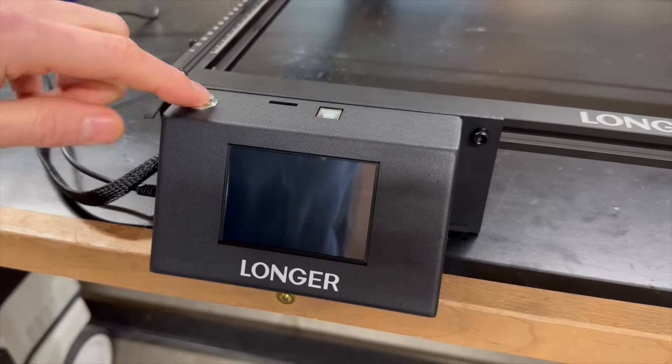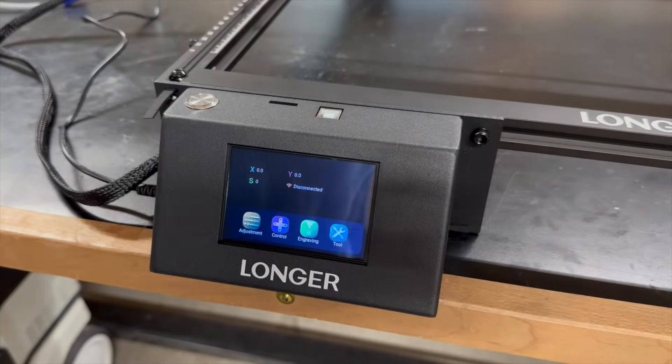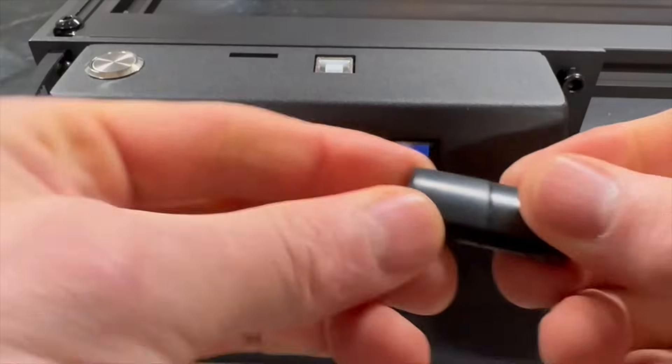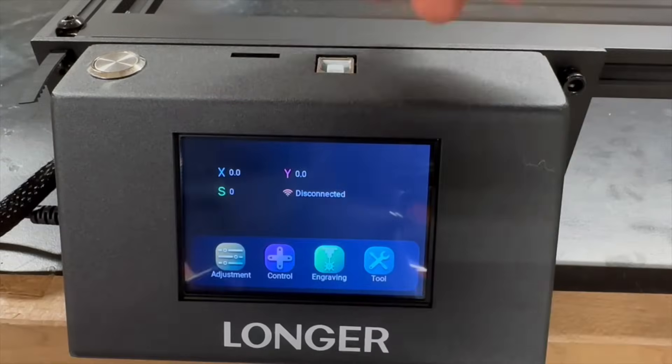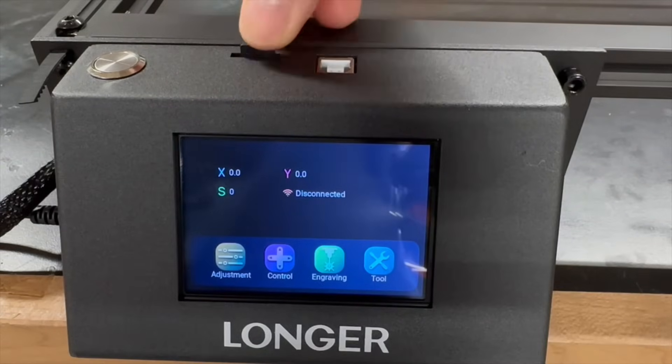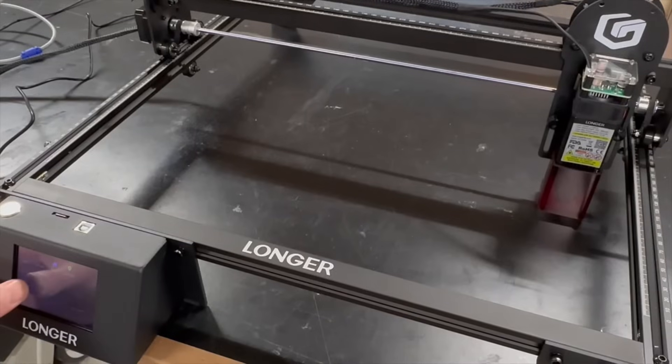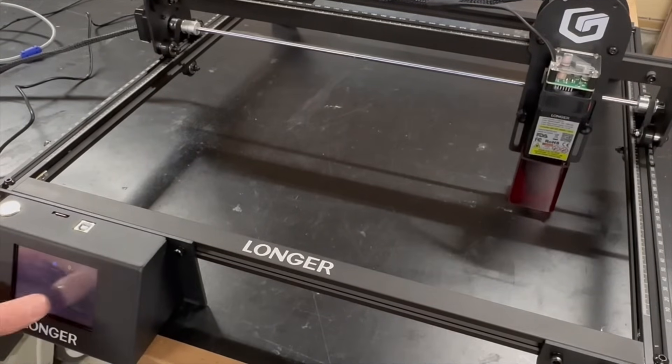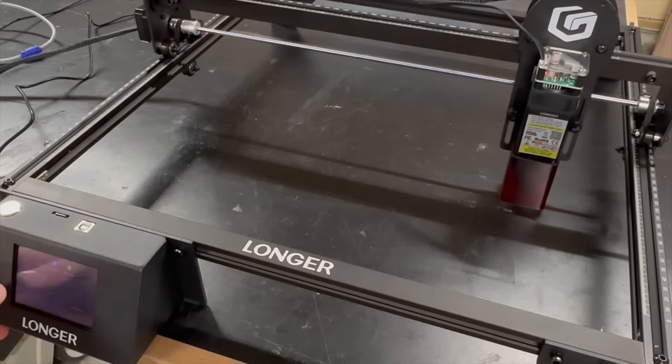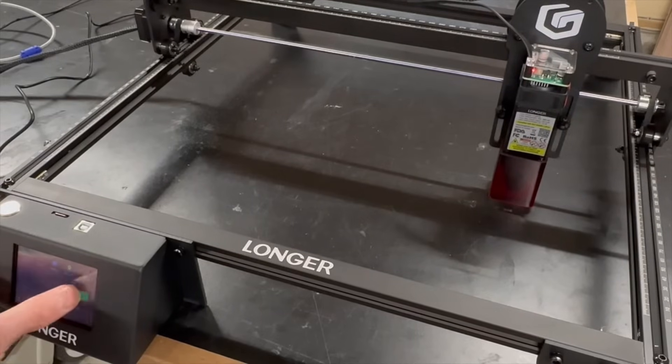At this point I was ready to turn the machine on for the first time. There are three different ways that you can operate the Ray 5. One of them is with a micro SD card which Longer included a USB adapter for. It goes into a slot on the top of the control unit and includes a couple test files and software. The Ray 5 can also be connected and operated wirelessly, but to be honest I haven't messed around with that and I'm not intending to. The third way to operate it is through a USB cable connected to a computer and that's what I'll be showing a little later on.